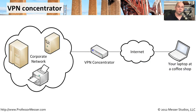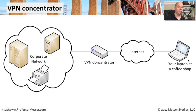From the end user's perspective, using a VPN concentrator is pretty simple. You might be out at a coffee shop and realize you need access to a file that's inside your network back at corporate — something you don't have access to when you're out in public, and it's also very sensitive data so you don't want anybody seeing that information. You would start the VPN software on your workstation, and it creates what we call an encrypted tunnel back to the VPN concentrator.